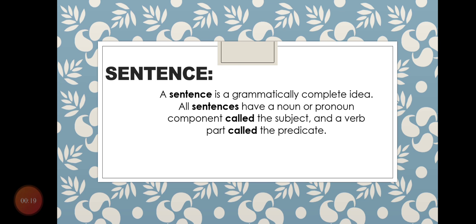A sentence is a grammatically complete idea. All sentences have a noun or pronoun component called the subject, and a verb part called the predicate. This means that sentences comprise two parts: number one, subject; number two, predicate.